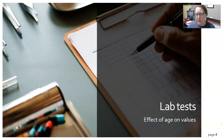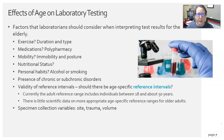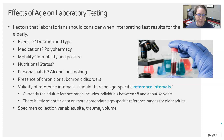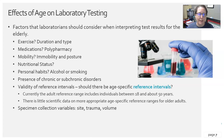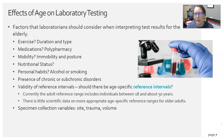Now let's look at the effect of age on lab test values. Factors that laboratorians should consider when interpreting tests for the elderly include: exercise — are they exercising, have they recently exercised, how long and what type; medications — the average elderly person is on polypharmacy, meaning multiple prescription drugs simultaneously, which can cause interferences with certain lab tests; and mobility and posture — is the patient bed-bound, wheelchair-bound, sitting, or lying down when the sample is collected.